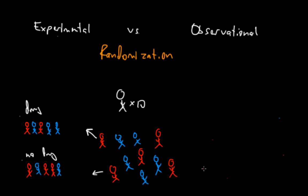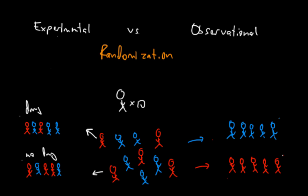In an observational study, you might be looking at people who live in cold weather versus people who live in hot weather. All the blue people who live in cold weather are grouped together because of some characteristic the experimenter can't control, and the same for people grouped together because they live in hot weather. So randomization is what determines the difference between an experimental study, which has randomization, and an observational study, which does not.